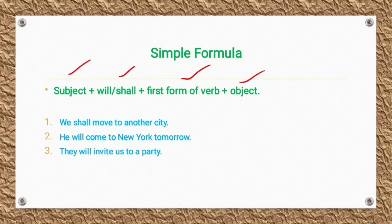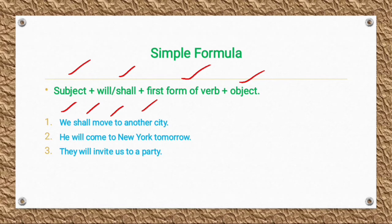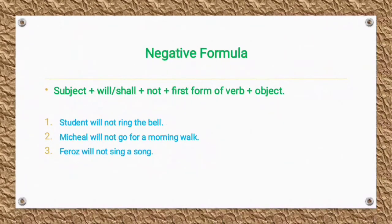The affirmative formula is: Subject + will/shall + first form of the verb + object. For example: 'We shall move to another city' — 'we' is the subject, 'shall' is the auxiliary verb, 'move' is the first form of the verb, 'to another city' is the object. Other examples: 'He will come to New York tomorrow', 'They will invite us to a party.'